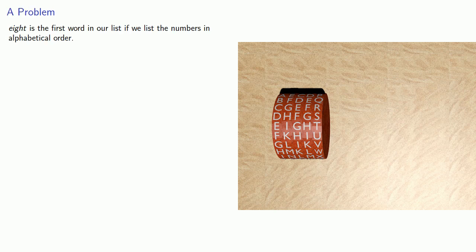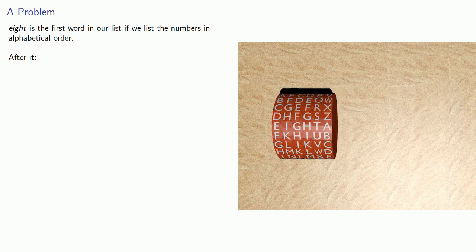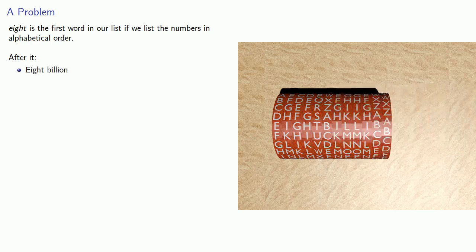Now, eight is the first word in our list if we list the numbers in alphabetical order. After it, well, there's a bit of a problem. So we might consider the letters that could go after the T, and we think about that a little bit. And I could put billion after it. Eight billion would come after eight.